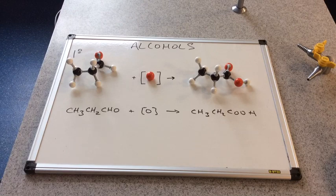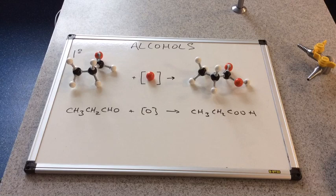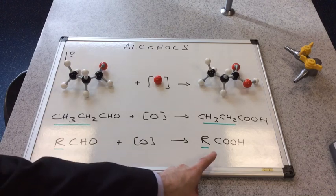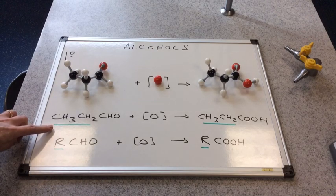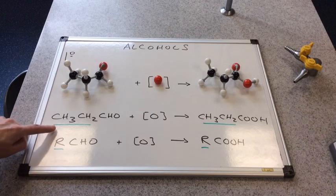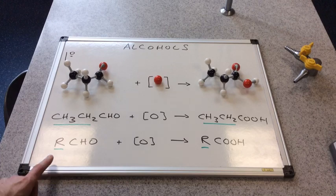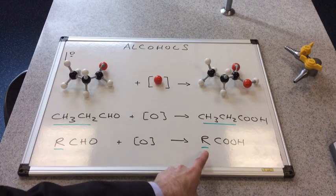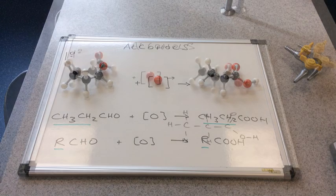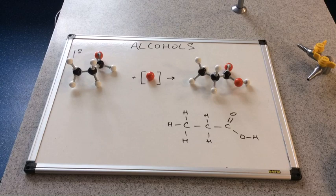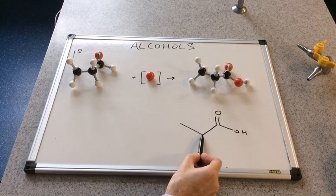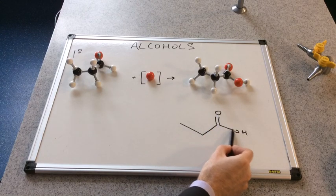Notice there's no water produced in this oxidation. Water is only produced in the first oxidation, from the alcohol to the aldehyde. We've got the general form of this equation. The green underlined part is the bit that doesn't change. The R group represents the CH3CH2 group, and you can see that the only thing that's changed is the CHO part has turned into COOH. There's the displayed formula and the skeletal formula of propanoic acid.